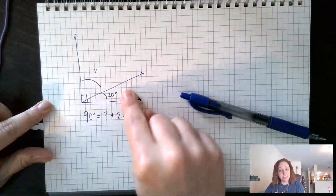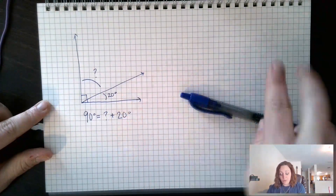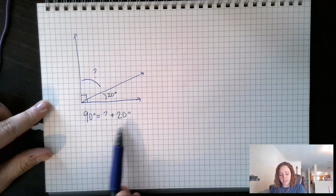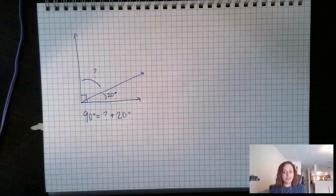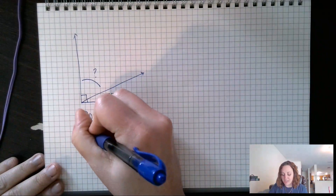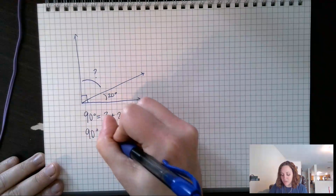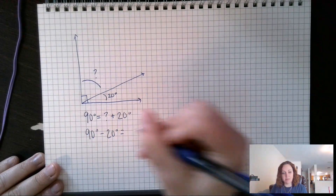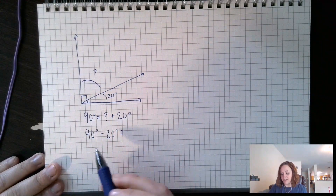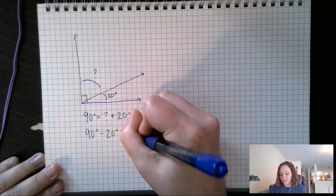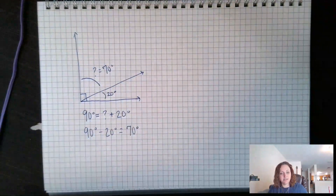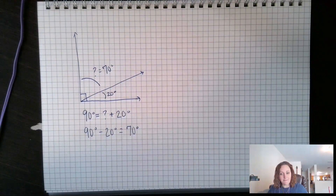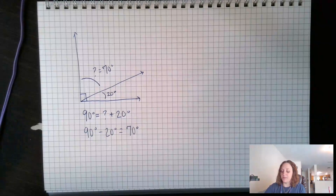If I add this piece and this piece together, they equal 90 degrees total. So if I add 20 to my unknown angle I get 90 degrees. The opposite of addition is subtraction, so I do 90 minus 20 to get my unknown angle. 90 minus 20 is 70 degrees — that's my unknown angle.